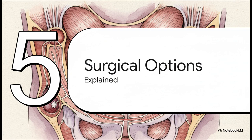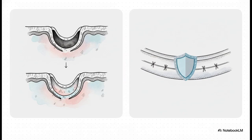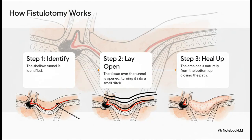So how do surgeons actually pull this off? There are a bunch of different procedures, but they basically all fall into two main strategies depending on whether we're dealing with a simple or a complex fistula. For simple fistulas — the ones where those gatekeeper muscles aren't really involved — the most common and effective procedure is called a fistulotomy. The surgeon basically opens up the top of that shallow tunnel, turning it from a tunnel into a little ditch. This lets the whole area heal naturally from the bottom up, which gets rid of the path for good. It's an incredibly effective fix for the right kind of fistula.